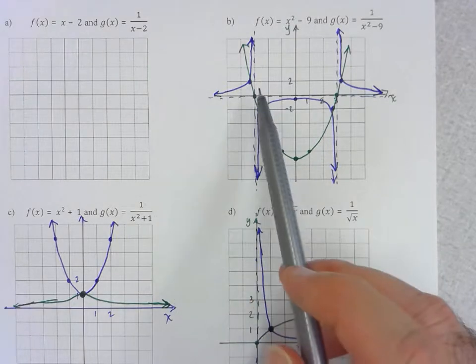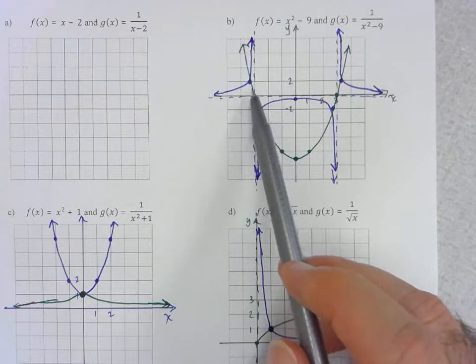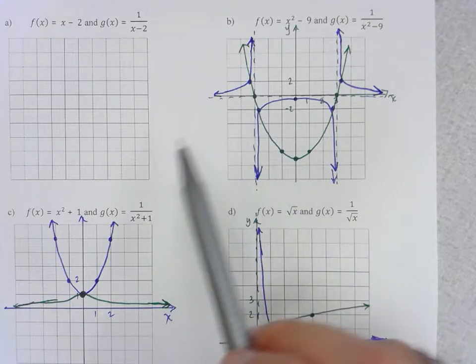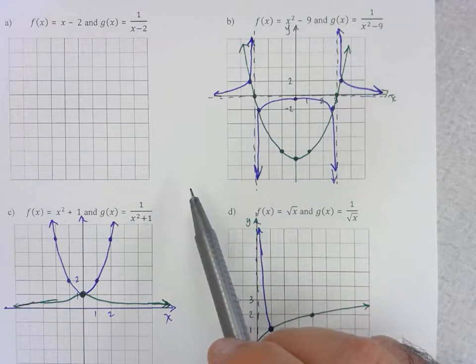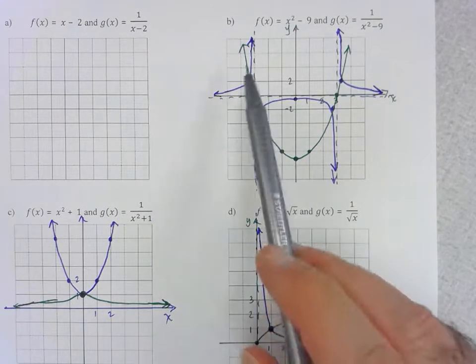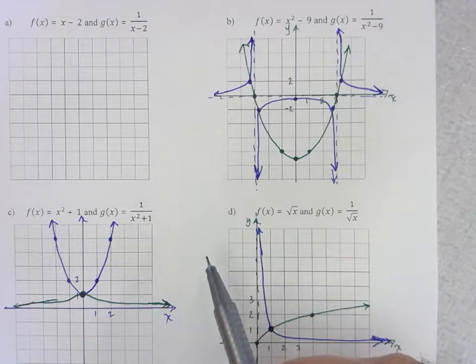Okay, and if we study the behavior of the original function near those asymptotes we can determine whether the function is approaching positive or negative infinity on either side.